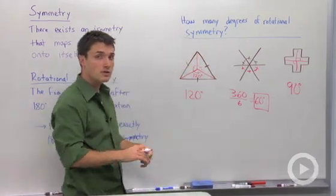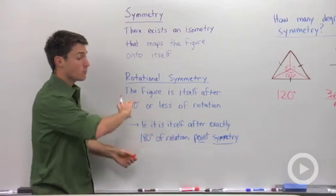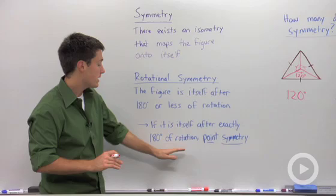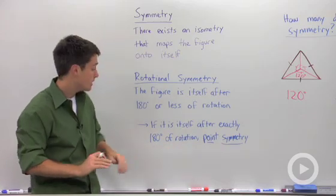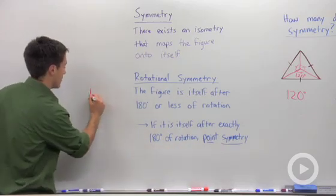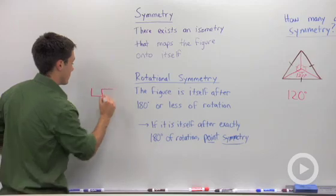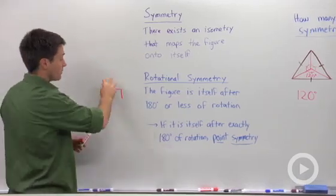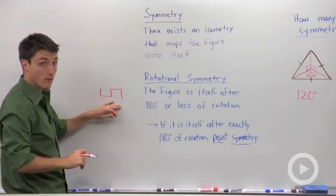So again, rotational symmetry—what does it mean? It means that you can rotate it less than 180 degrees and the figure will be exactly the same. And if you can rotate it exactly 180 degrees, let's say we had a figure kind of like this. You see that if I rotate it exactly 180 degrees, it will be itself.